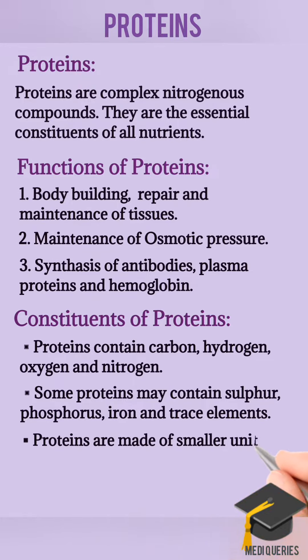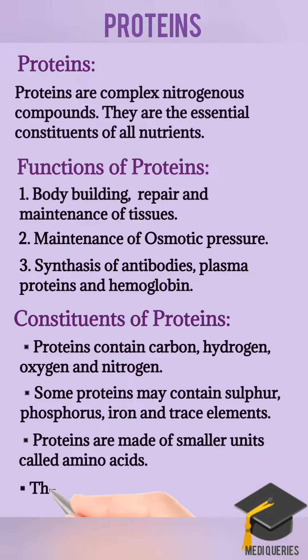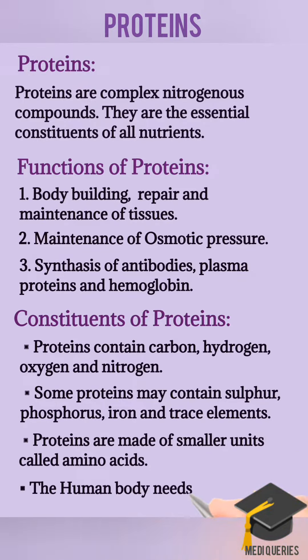Proteins are made of smaller units called amino acids. The human body needs 24 amino acids.